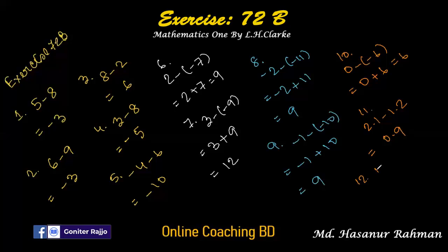Number 12: 4.3 minus 6.7. If we separate 4.3 from 6.7, we get 2.4. The sign of the larger number is negative, so the answer is minus 2.4.